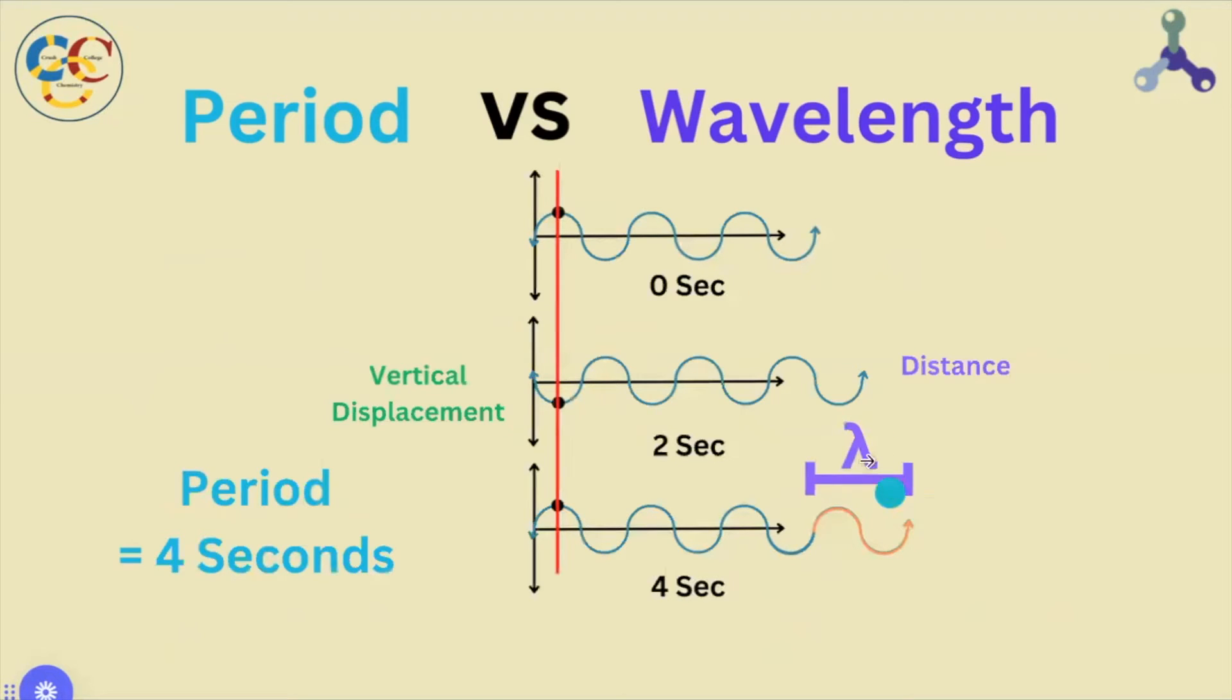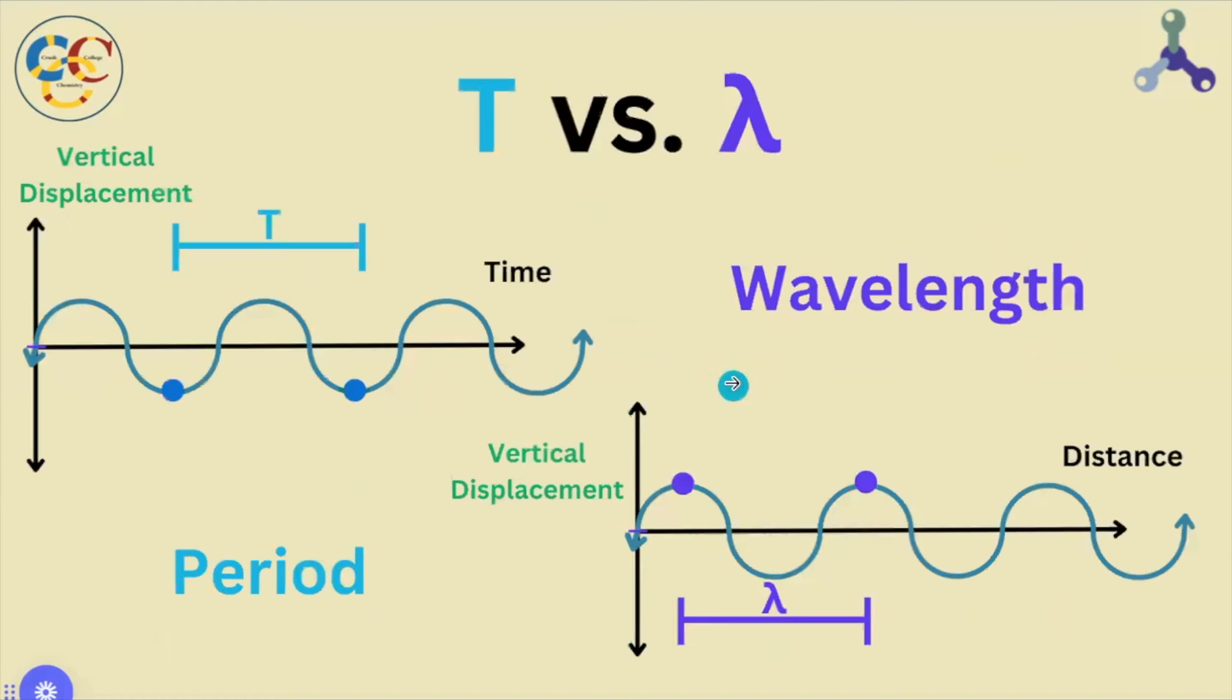Therefore, period and wavelength are completely congruent. For this reason, from a graphical standpoint, period and wavelength are trigonometrically identical.